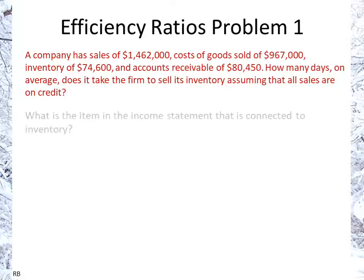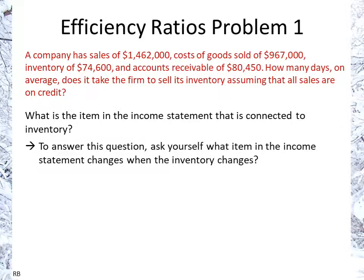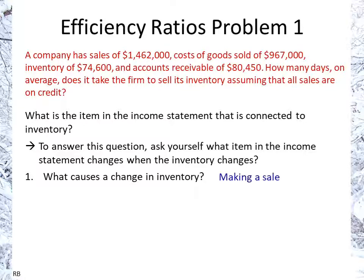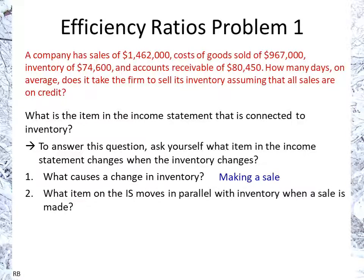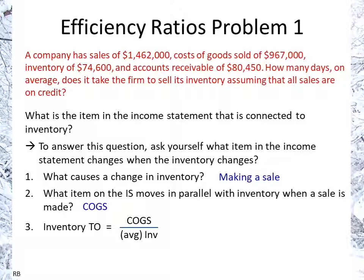So what is the income statement item connected to inventory? Ask yourself: what item in the income statement will change when inventory changes? What causes a change in inventory? Well, that would be making a sale. Then what item on the income statement moves in parallel with inventory when that sale is made? That is not revenues — rather, it's cost of goods sold, because we debit cost of goods sold and credit inventory with the same figure. So inventory turnover is cost of goods sold divided by average inventory.